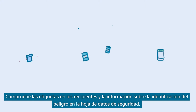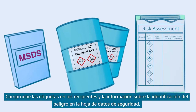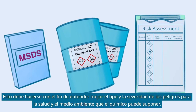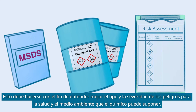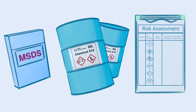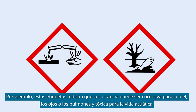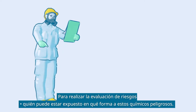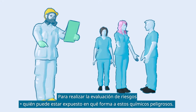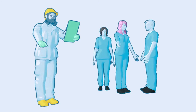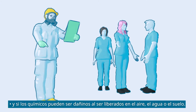Check the labels on the container and the information on hazard identification in the Safety Data Sheet. This should be done to better understand the type and severity of hazards to health and environment that the chemical may pose. For example, these labels indicate that the substance may be corrosive to skin, eyes or lungs, and toxic to aquatic life. To conduct the risk assessment, check who may be exposed and in which way to these hazardous chemicals, and whether the chemicals may do harm when released into air, water, or soil.